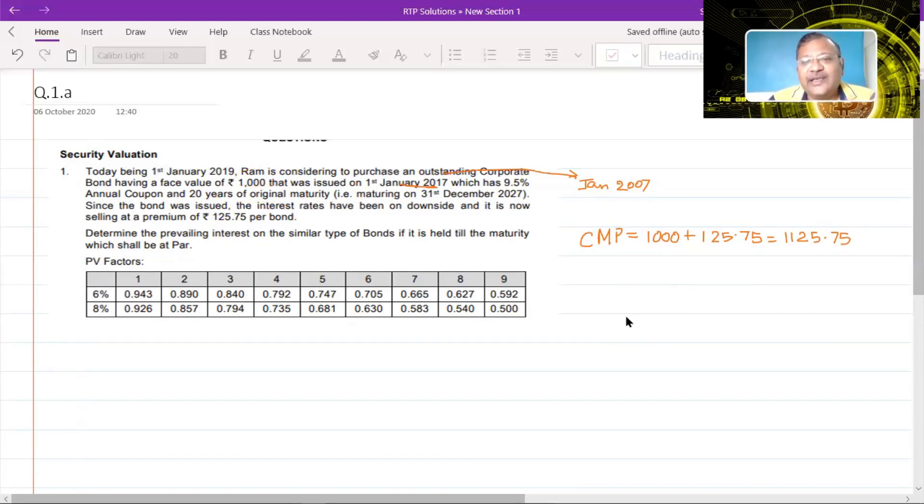Why did we do 1000 plus 125.75? Because they said that the bond was having a face value of 1000 and now they are saying that it is quoting at a premium of 125.75 per bond. That means the price of the bond would be 1000 face value plus the premium. Now, how many years does the bond still have for maturity? The life remaining of the bond. They are saying today is 1st January 2019 and the bond matures on 31st December 2027. That means the number of years remaining is 9 years. Determine the prevailing interest rate on the similar type of bonds if it is held till maturity, which shall be at par.